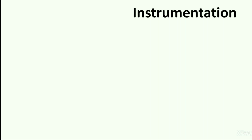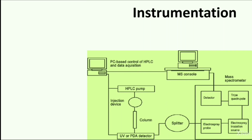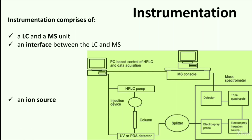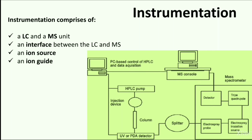Instrumentation of LC-MS: For an LC-MS system, the instrumentation is composed of a liquid chromatography and a mass spectrometry unit such as HPLC and mass spectrometer, an interface between the LC and MS, an ion source that ionizes the sample such as an atmospheric pressure ionization unit, an ion guide which is an electrostatic lens that efficiently introduces the generated ions into the mass analyzer, a mass analyzer unit that separates the ions based on their mass-to-charge ratio, and a detector unit that detects the separated ions.